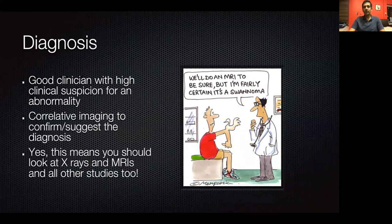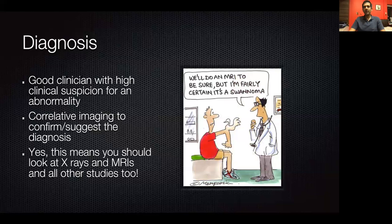Correlative imaging is important — sometimes we see something on ultrasound and it's not what it seems, so it's important to look at x-rays and MRIs before making a call on diagnosis. The clinical examination is also important; sometimes we see findings on MRI, x-ray, and ultrasound that don't reflect the patient's actual symptoms, and we have to treat something else altogether.